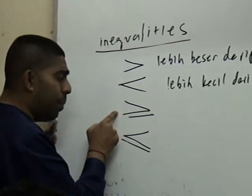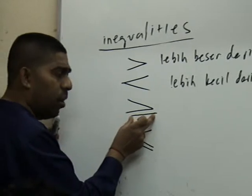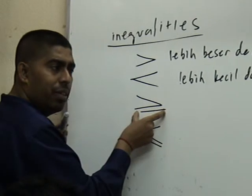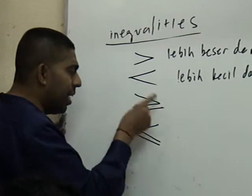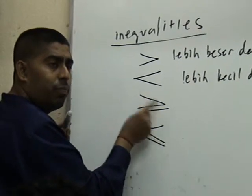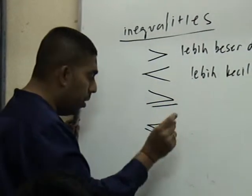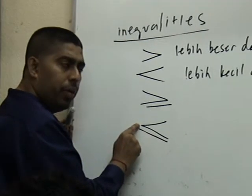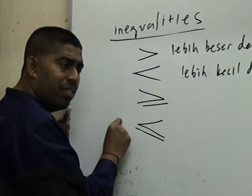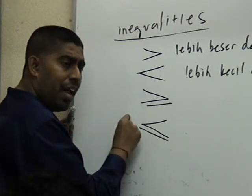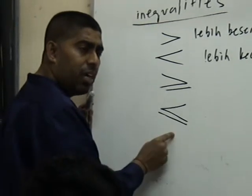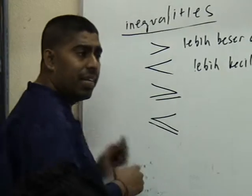Yang ni nampak tak? Mulut terbuka besar, ada bawah satu lagi karis. Ini maksudnya lebih besar atau sama dengan. Bigger than or equal. Yang ni pula, mulutnya kecil. Less than or equal. Lebih kecil daripada atau sama dengan. So ada empat tanda ni.